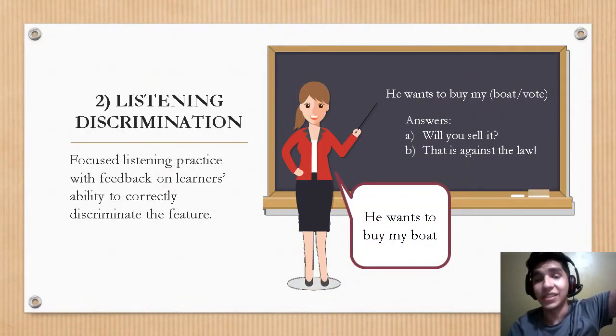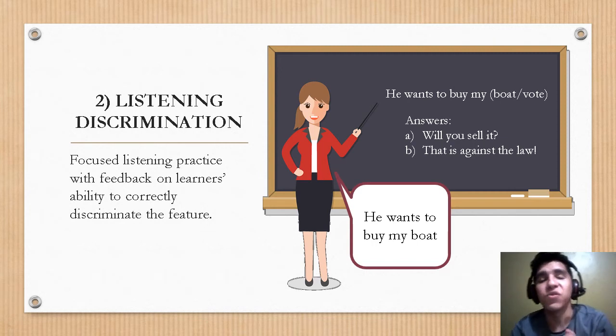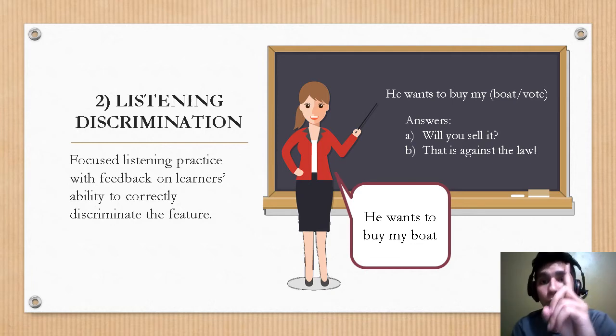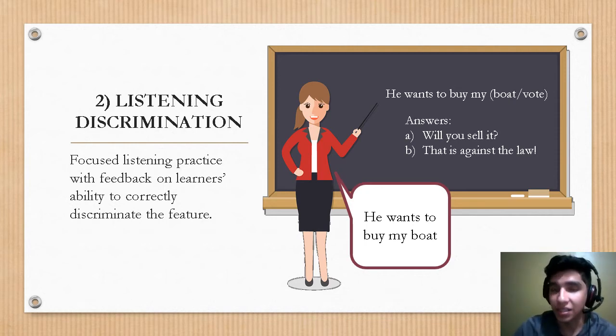Let's go to the stage number two, which is listening discrimination. Listening discrimination is focused listening practice with feedback on learners' ability to correctly discriminate the feature. When we are doing a listening discrimination, we need to use contextualized activities where students must pay attention carefully to what they hear. One very common example is when we are teaching minimal pairs because the difference between words is in only one sound. So, look at this picture. We have this teacher teaching this topic and she says, he wants to buy my vote.